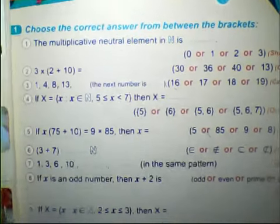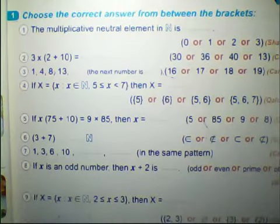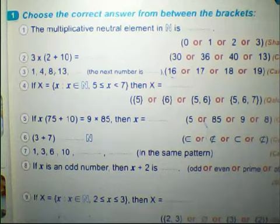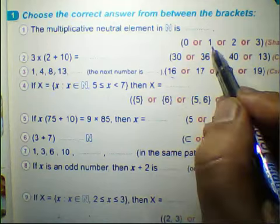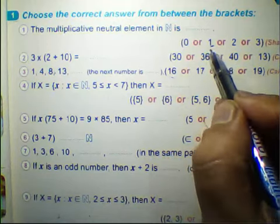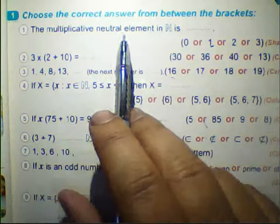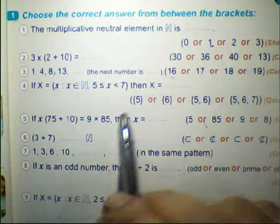Question number 1: choose the correct answer from between the brackets. Number 1: the multiplicative natural element in N is what? The answer is 1. The multiplicative natural element in N is 1.